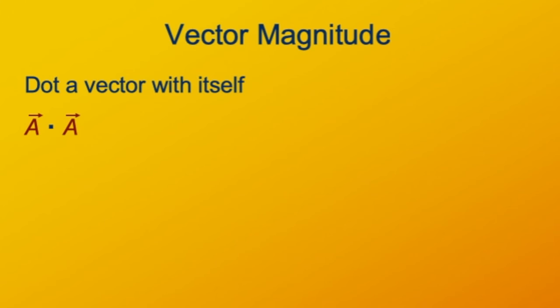If you take the dot product of a vector with itself, thinking of vectors as magnitudes and directions, that would be vector A dot vector A: the magnitude of A times the magnitude of A times the cosine of the angle between them. If it's the same vector, the angle between them is zero. The cosine of zero is one, so that gives us A squared, the square of the magnitude of vector A.